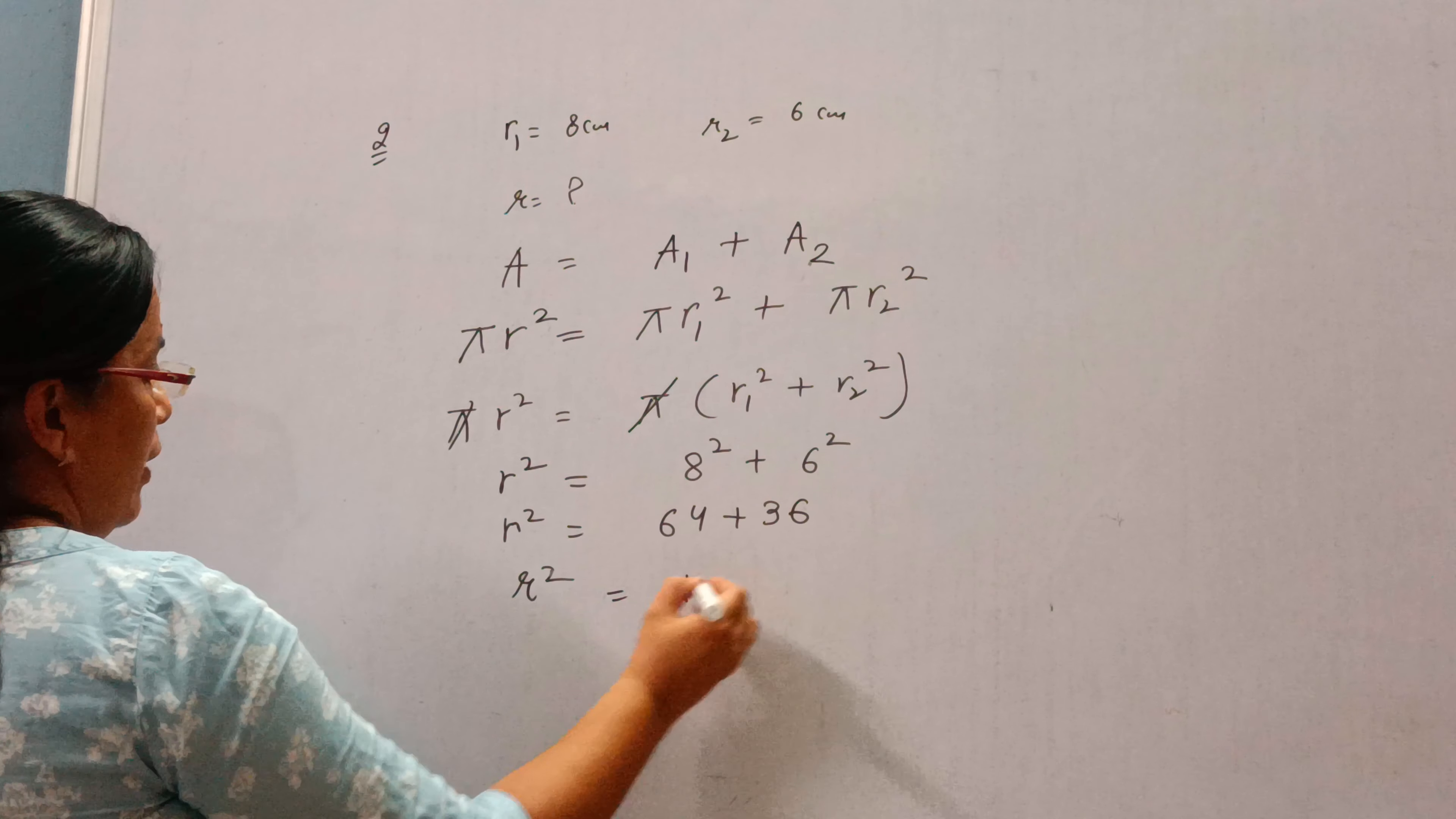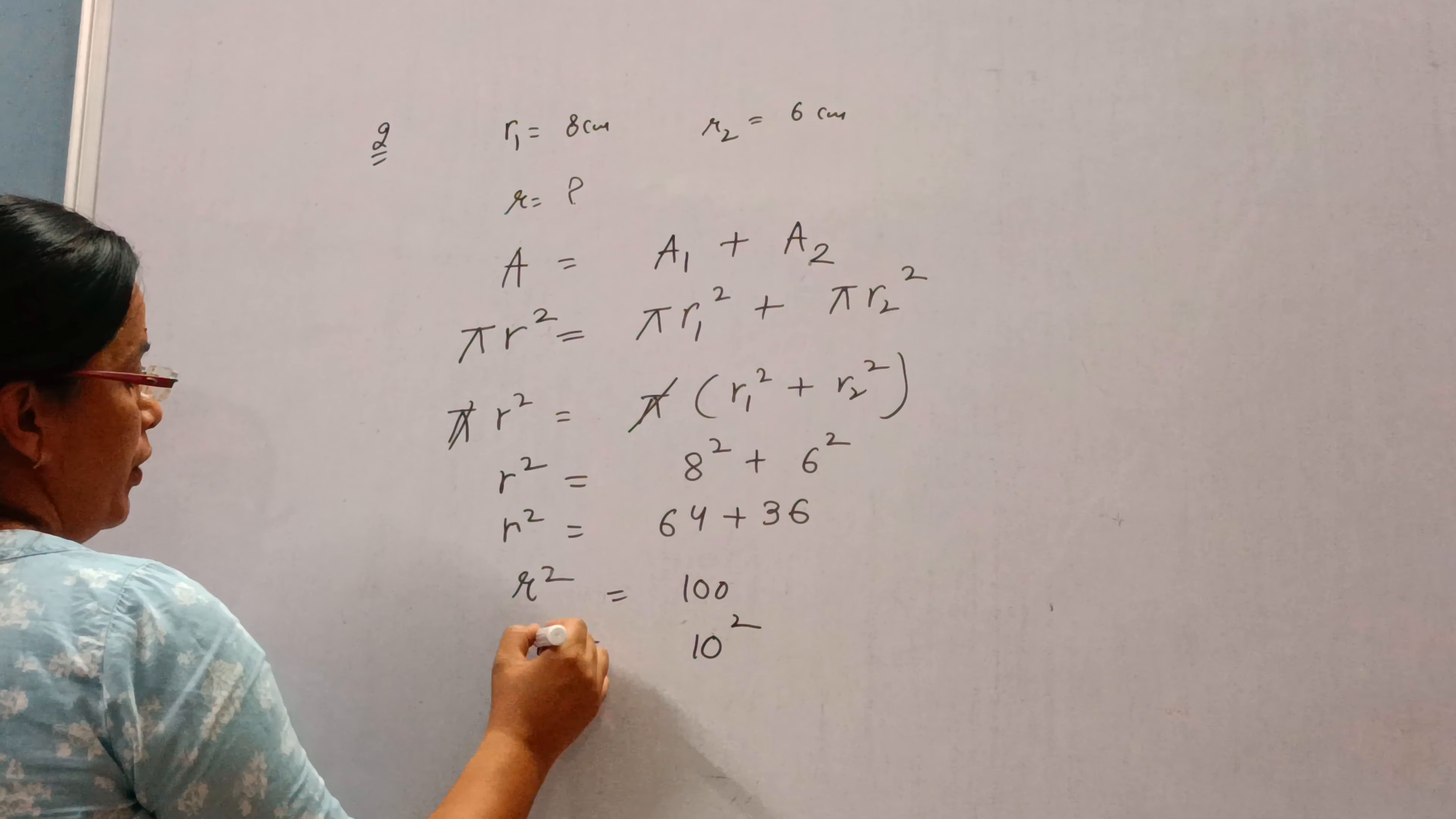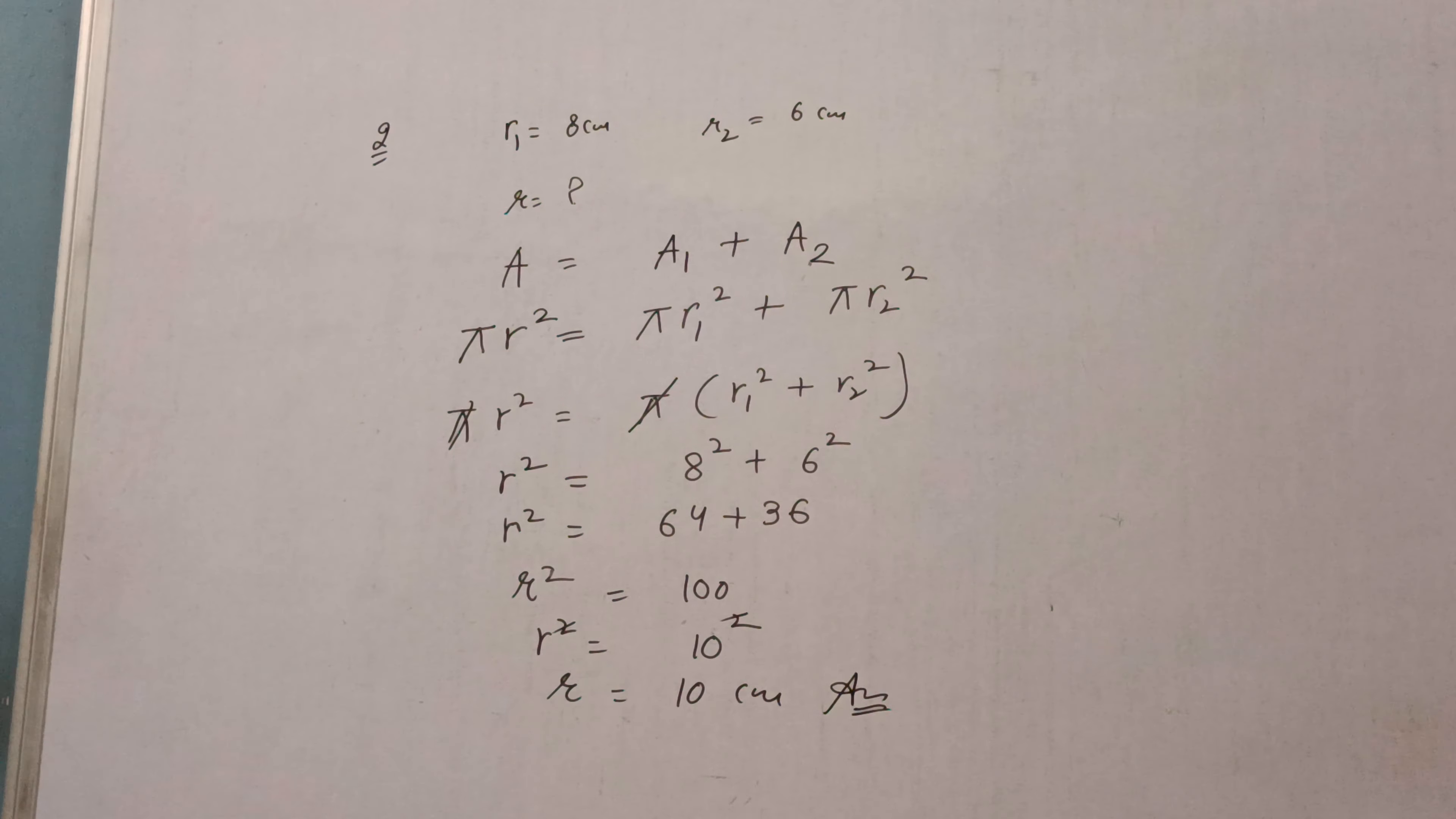8 square is 64, 6 square is 36. So R square is equal to 100, and we know 100 is the square of 10. We can take the square root, that will be 10 cm.